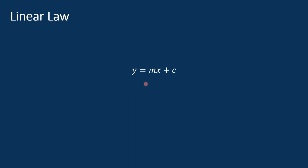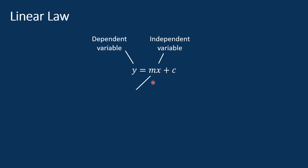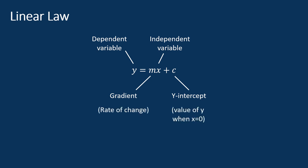Linear law refers to a mathematical relationship that describes a straight line relationship between two variables. It is written as y equals mx plus c, where y is the dependent variable, x is the independent variable, m is the gradient of the line, and c is the y-intercept. The gradient represents the rate of change between x and y, and the y-intercept represents the value of y when x equals 0.